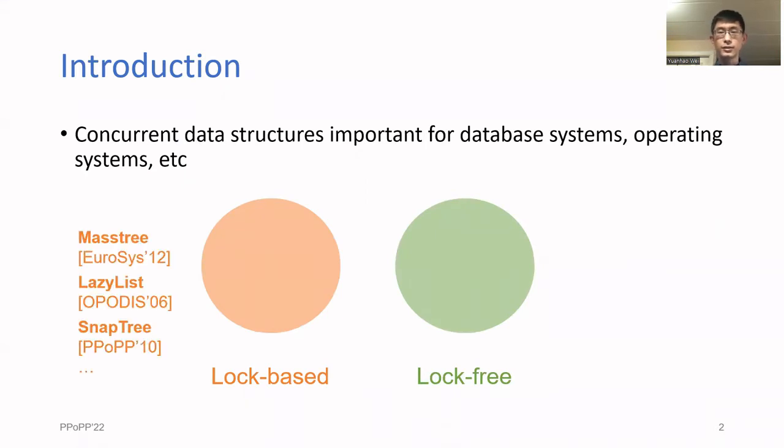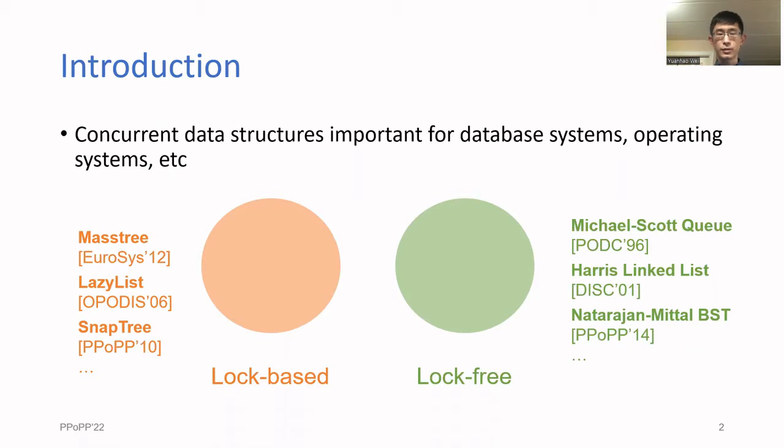Examples include MassTree, LazyList, SnapTree, and so on, which use fine-grained locks. And on the lock-free side, there's Michael Scott's queue, Harris's linked list, and many more.